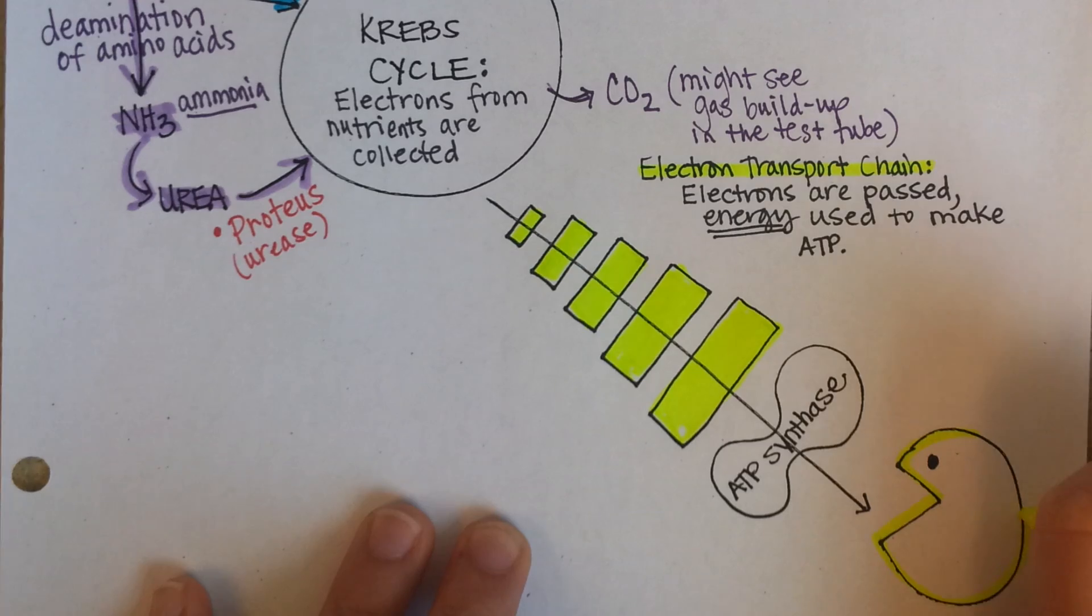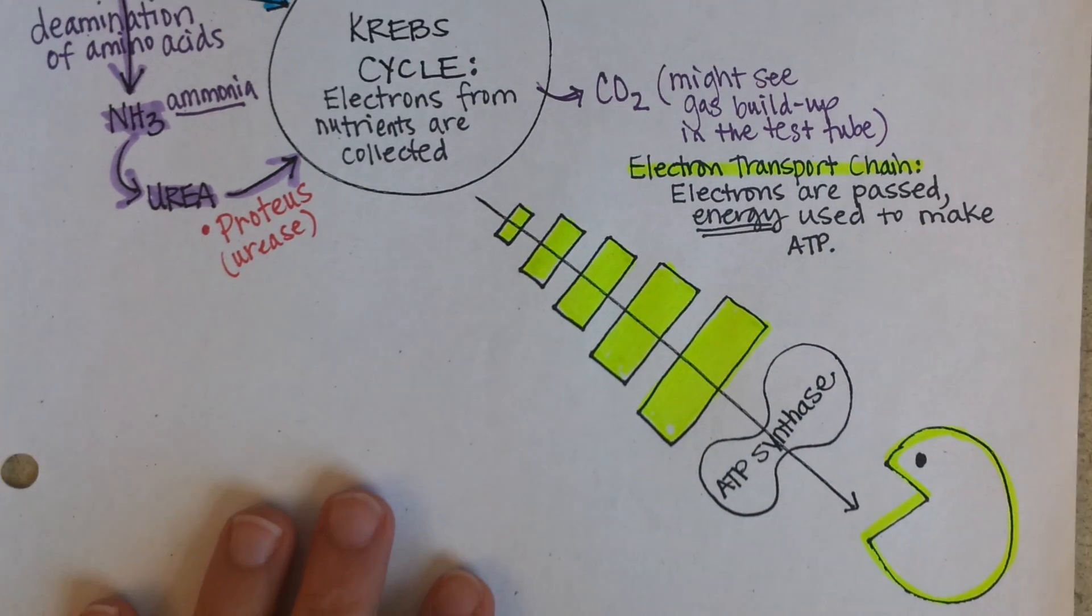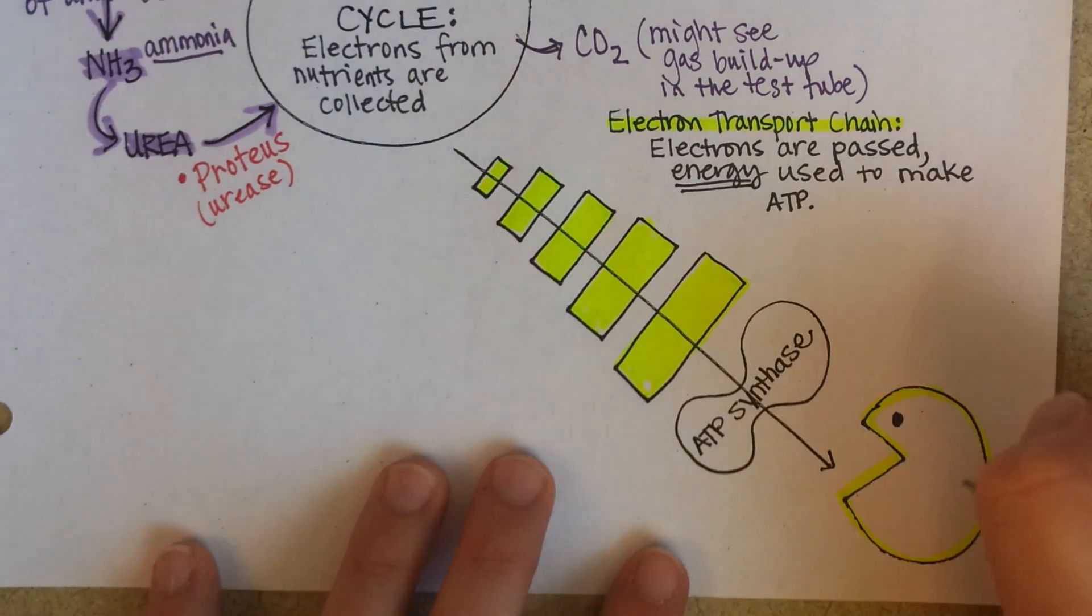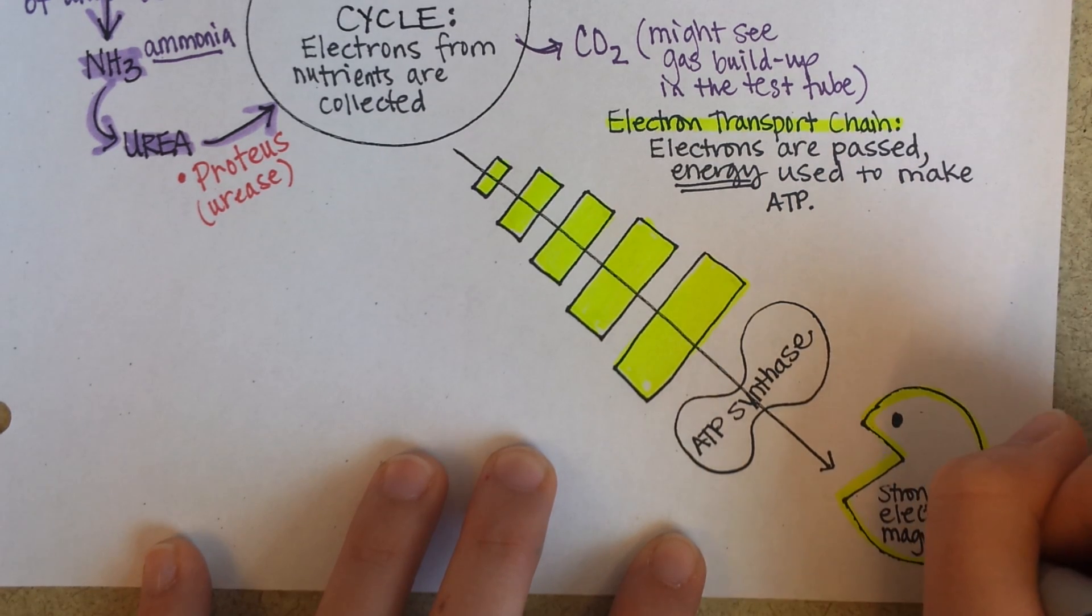which is either oxygen in humans or maybe nitrogen or even sulfur. Down here this is the strongest magnet. Strongest electron magnet. Loves to eat them.